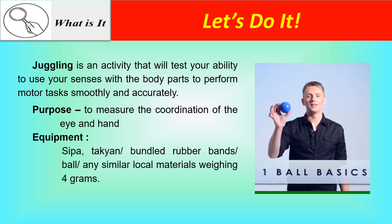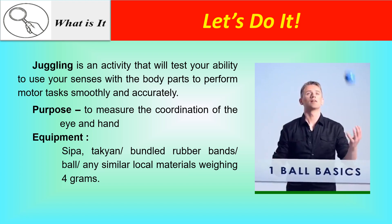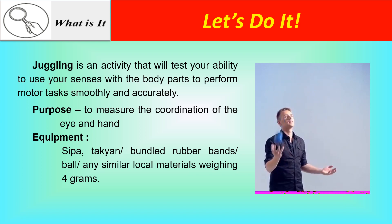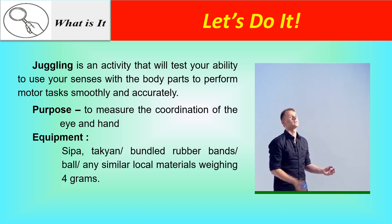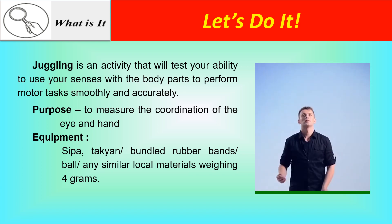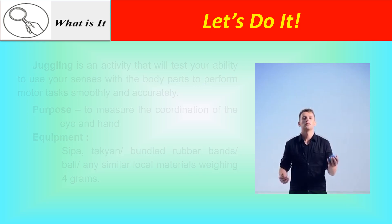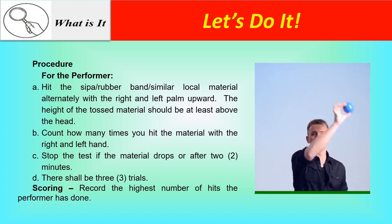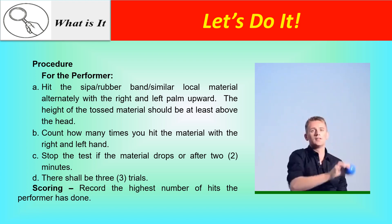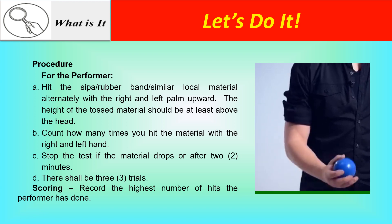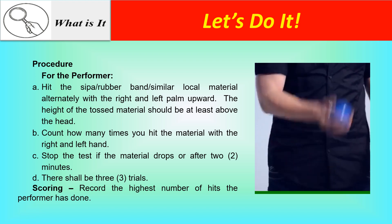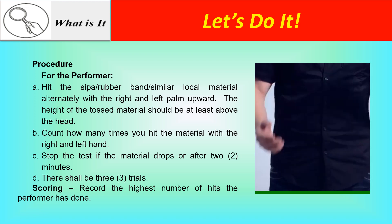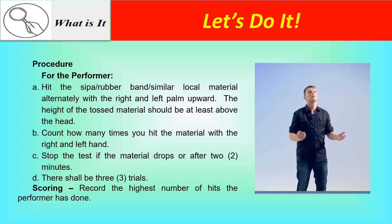Juggling is an activity that will test your ability to use your senses with body parts to perform motor tasks smoothly and accurately. Purpose: To measure the coordination of the eye and hand. Equipment: SIPA, tachyon or bundled rubber bands, or ball, or any similar local materials weighing 4 grams. Procedure: A. Hit the SIPA, rubber band, or similar local material alternately with the right and left palm upward. The height of the tossed material should be at least above the head. B. Count how many times you hit the material with the right and left hand. Stop the test if the material drops or after 2 minutes. There shall be 3 trials. Scoring: Record the highest number of hits the performer has done.